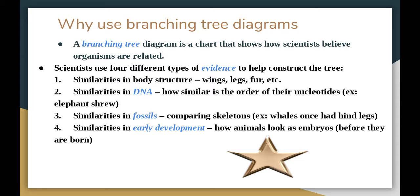We also use branching tree diagrams, especially cladograms, to show how organisms are related in regards to body structure — wings, fur, legs, etc. For example, the whale had legs before, so we group it with animals that have hip bones, because they still show evidence of having had legs. Similarities in DNA are also key — we group organisms with others that have similar DNA. Additionally, similarities in fossils and early development, called embryology, are used, since all animals look identical as embryos.